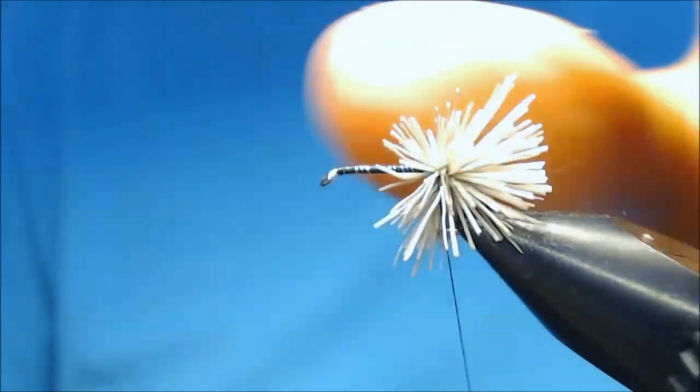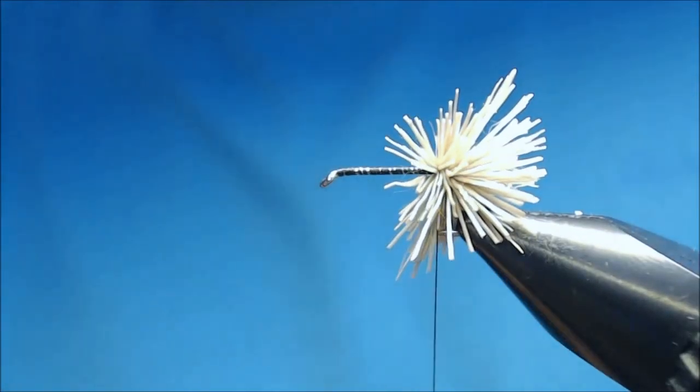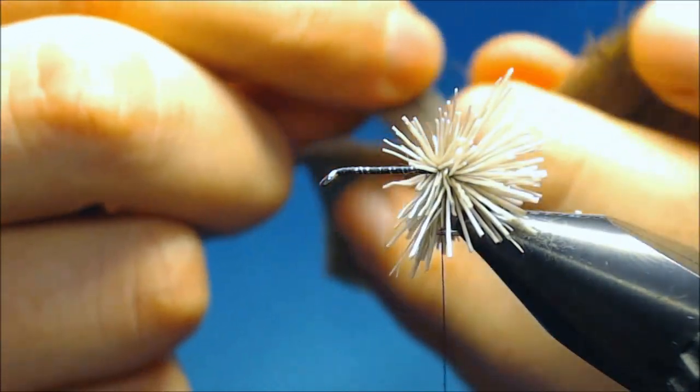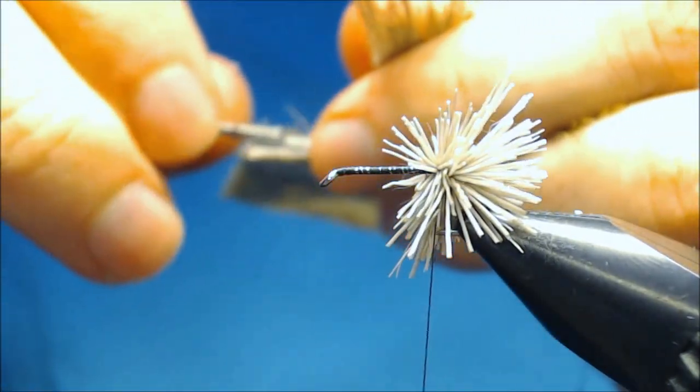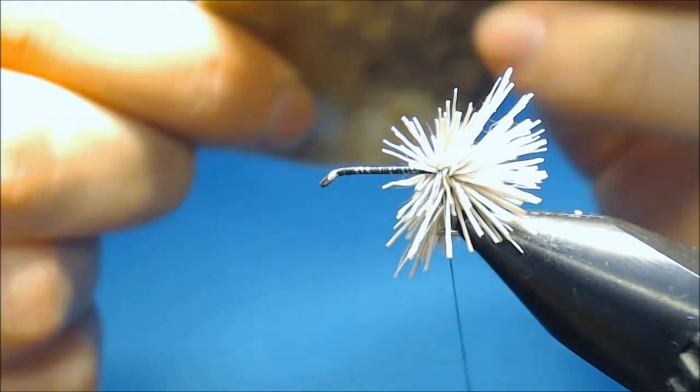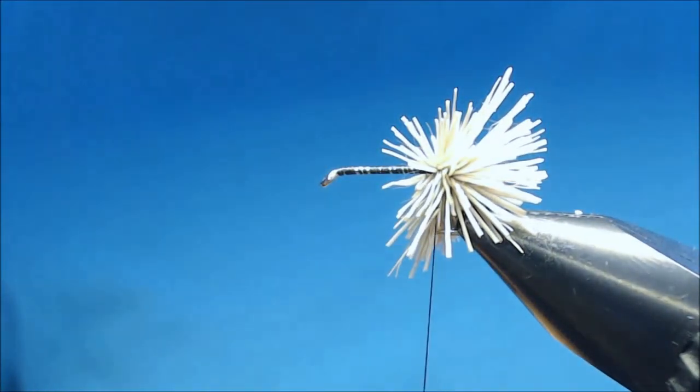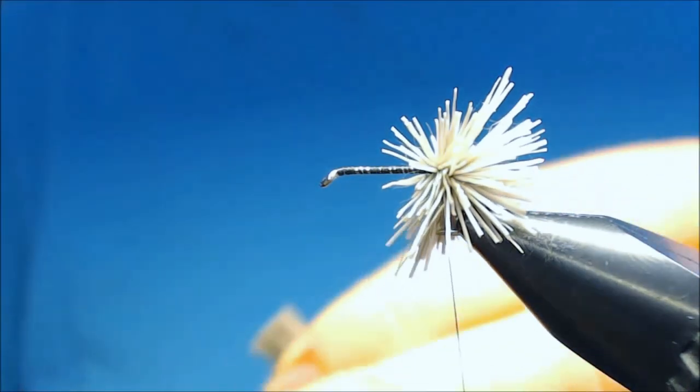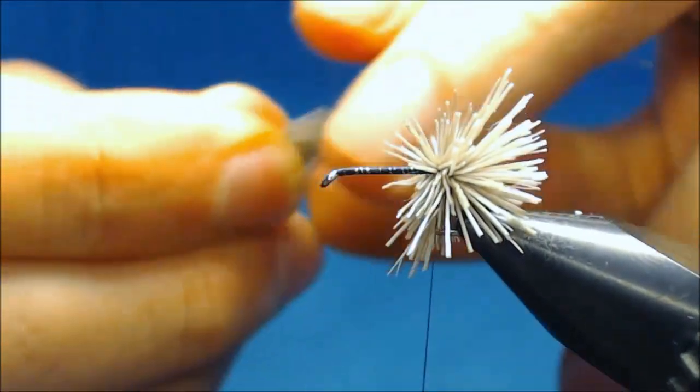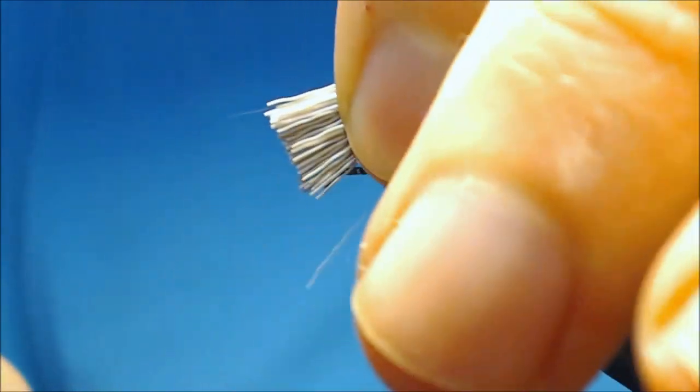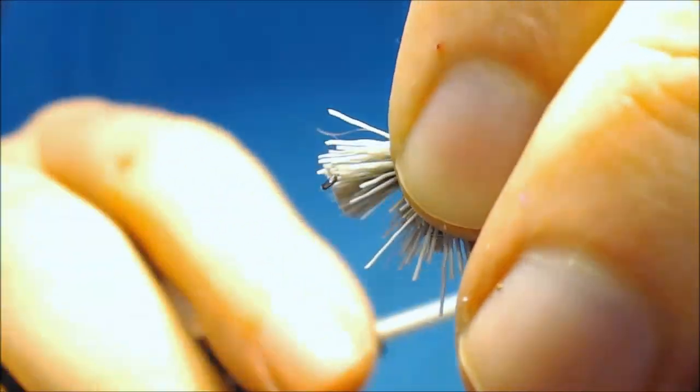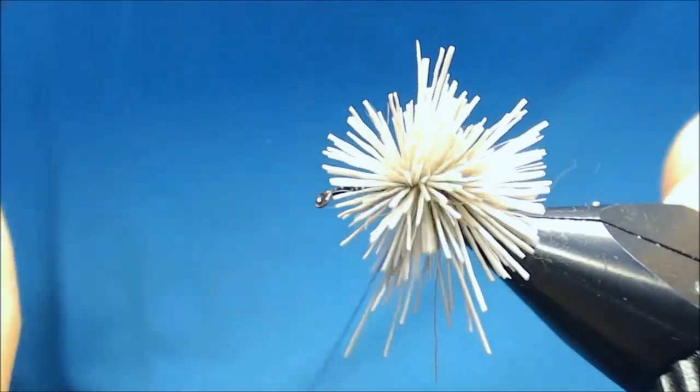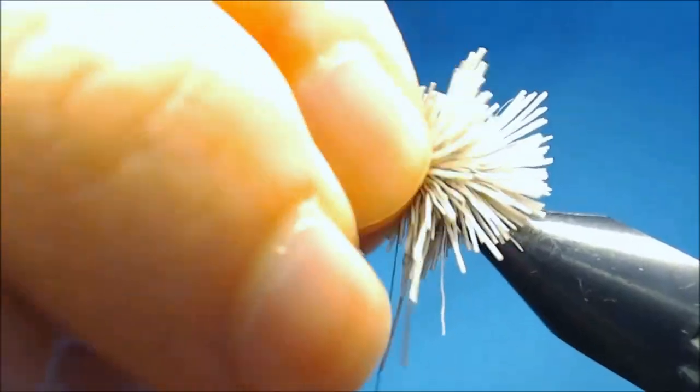And then we'll push back the fibers like here. And take another small clump. And then cut it off. As near to the hide as possible. Then I cut off the tips. And then do the same. Put it on top. Two loose turns. And then pull. And let the deer hair go. And it will automatically spin.